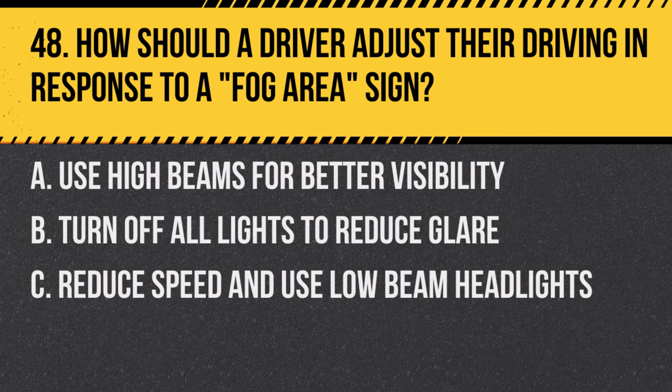Question 48. How should a driver adjust their driving in response to a fog area sign? A. Use high beams for better visibility. B. Turn off all lights to reduce glare. C. Reduce speed and use low beam headlights. Answer: C. Reduce speed and use low beam headlights. In foggy conditions, visibility is reduced, so it's safer to slow down and use low beams.